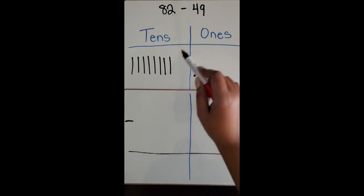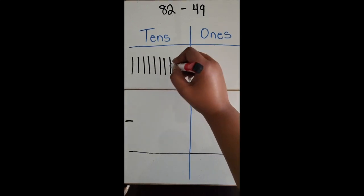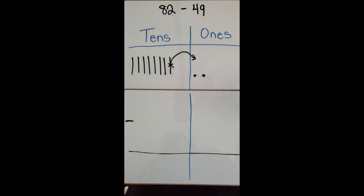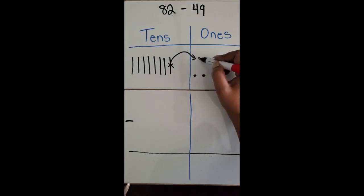I'm going to cross out a ten and draw an arrow to represent me regrouping a ten into ten ones. So one, two, three, four, five, six, seven, eight, nine, ten.